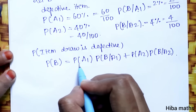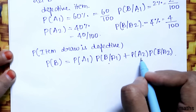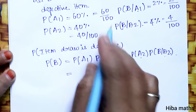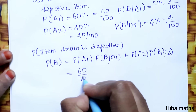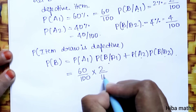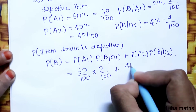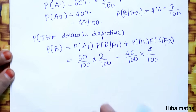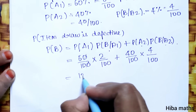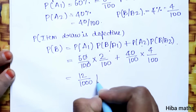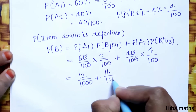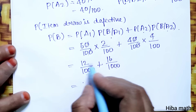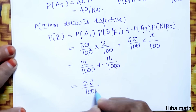By total probability: P of B equals P(A1) into P(B|A1) plus P(A2) into P(B|A2), which is 60 by 100 into 2 by 100 plus 40 by 100 into 4 by 100. That gives 12 by 1000 plus 16 by 1000, equal to 28 by 1000.